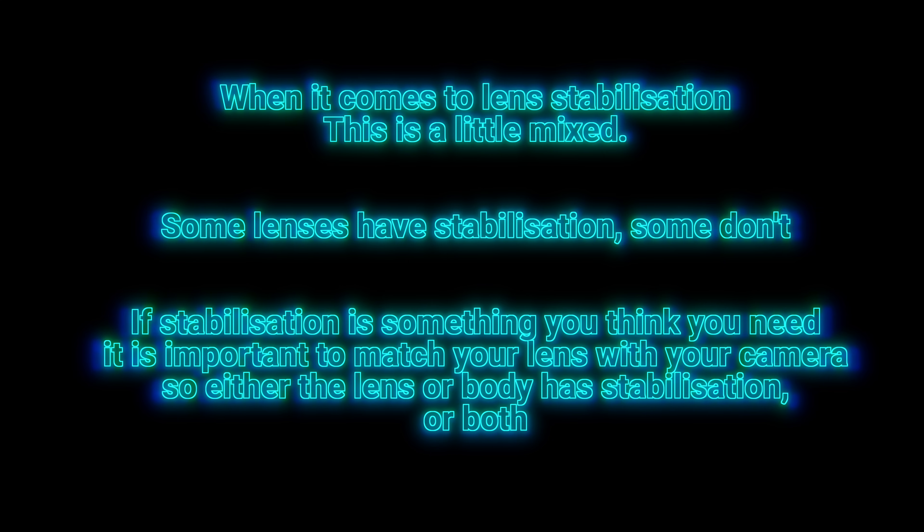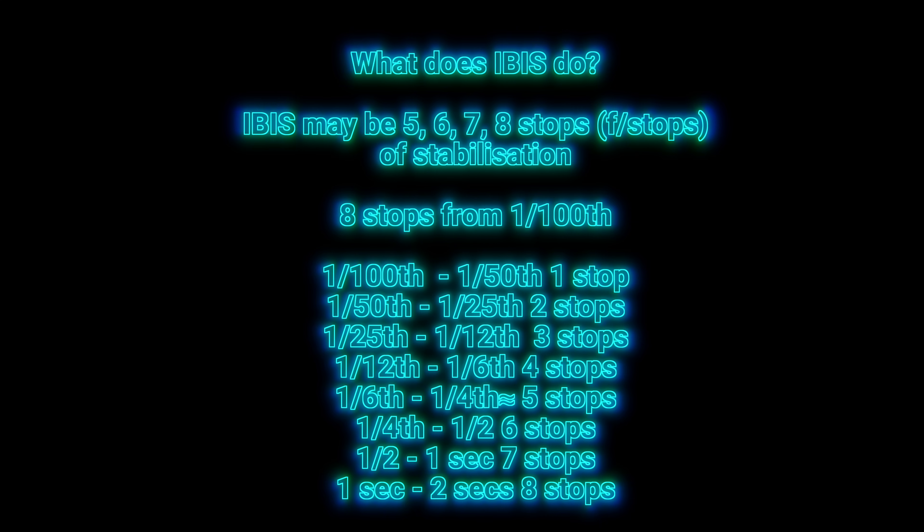As we've moved to the mirrorless era, stabilization is now in the bodies of our cameras, and they are getting remarkable — we have cameras with five, six, seven, and even eight stops. That's directly related to f-stops. F-stops and shutter speeds, when you halve them or double them, do the same thing: they halve or double light.